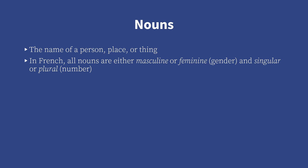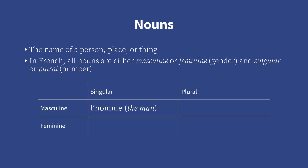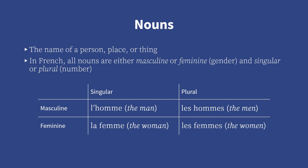For example, the French l'homme, meaning 'the man,' is a masculine singular noun, while les hommes, 'the men,' is its plural. La femme, or 'the woman,' on the other hand, is a feminine singular noun, and les femmes, 'the women,' is its plural.